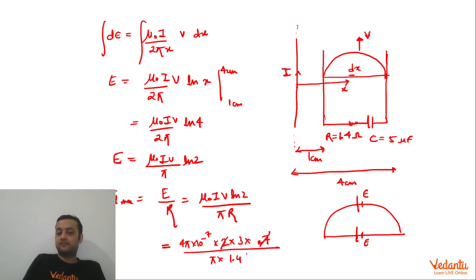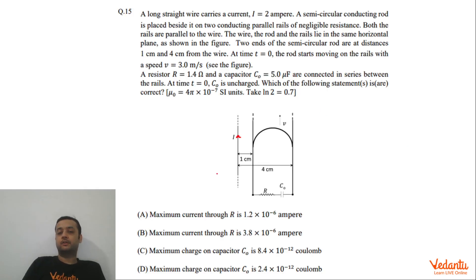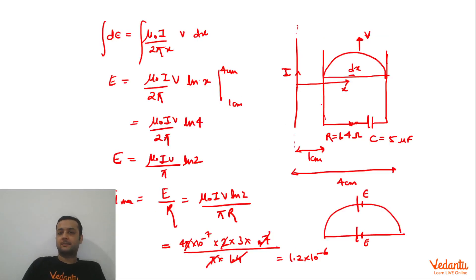So 2 and 0.7 will become 1.4. This will get cancelled. Pi and pi cancel. So this will become 1.2 into 10 to the power minus 6. And hence I max value 1.2 into 10 to the power minus 6. So as I said, if velocity is changing, then maximum current at time 0 will be 1.2 into 10 to the power minus 6, and at that instance velocity was 3.